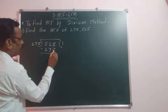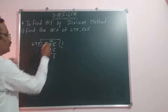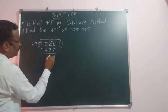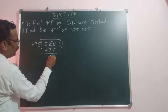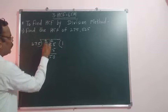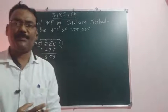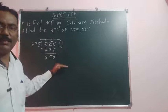5 minus 5 is 0. We cannot subtract 7 from 2, so borrow 1 from 5. 12 minus 7, that is 5. Here we get 4, 4 minus 2. So the remainder is 250.